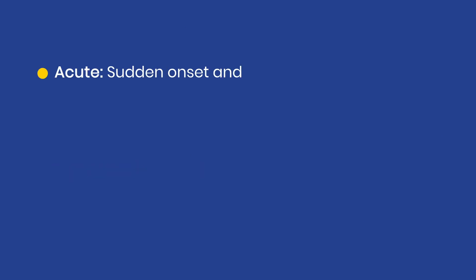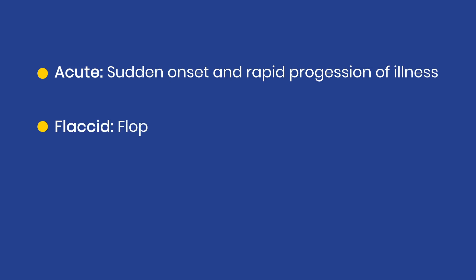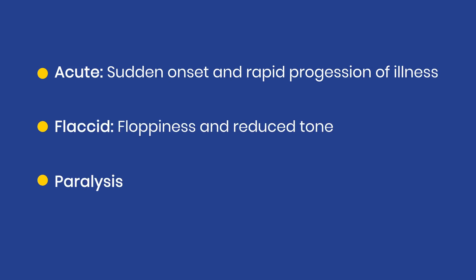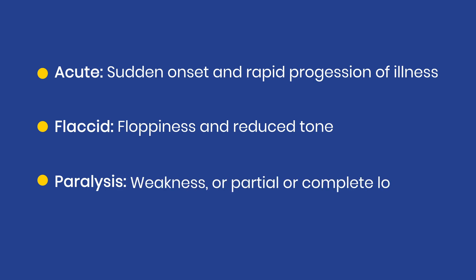Acute refers to sudden onset and rapid progression of illness. Flaccid refers to floppiness and reduced tone. Paralysis refers to weakness or partial or complete loss of power of the affected part.